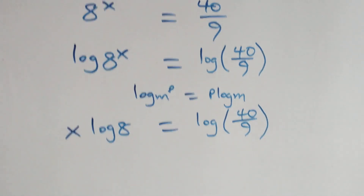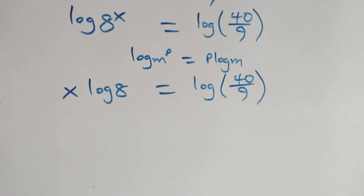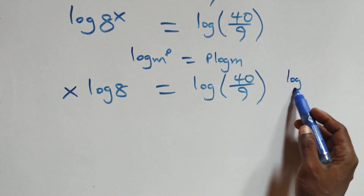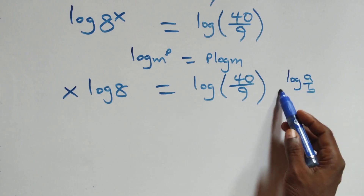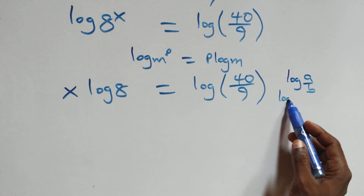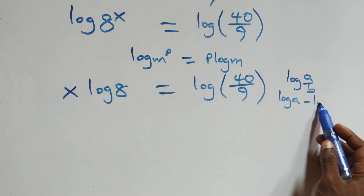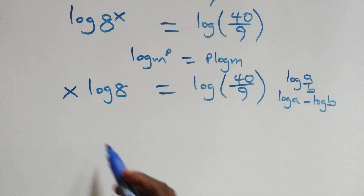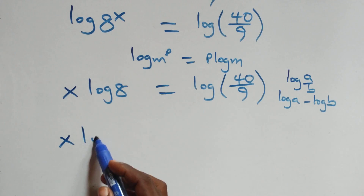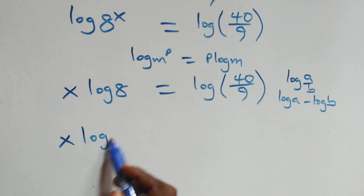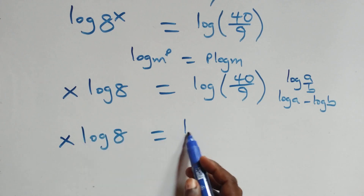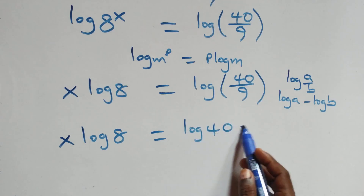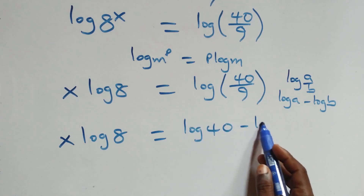Next step: let's apply the law of logarithms. When we have log a over b, it is the same thing as log a minus log b. So here we have x log 8 equals log 40 minus log 9.